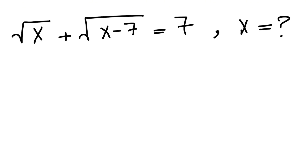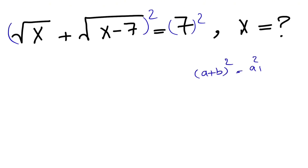The common way to go with this kind of question is that since we have the square root, we're going to square each side in order to get rid of the square roots. We know when we have (a + b) squared, this will be equal to a squared plus 2ab plus b squared. And we have the same scenario when we have a negative sign — we just have a negative sign in the middle too, which is not the case here.